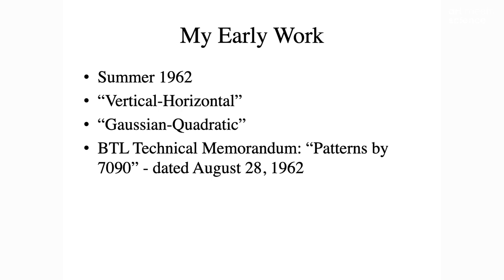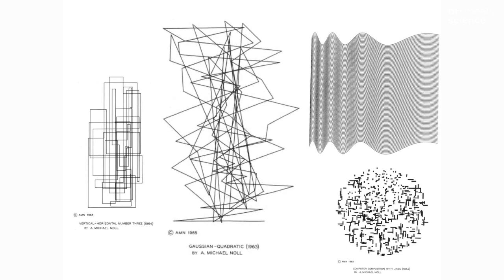That memorandum is up on the internet if somebody wants to read it. Some of my earliest works were vertical, horizontal, Gaussian quadratic. In the center is a Gaussian quadratic — in one direction it used random numbers calculated by the computer, and the other was a mathematical quadratic equation. It goes up to the top and then folds back down again. On the left are the vertical-horizontal pieces, requiring things to always go at 90 degrees. Up in the upper right is a takeoff on Bridget Riley's Currents, called 90 parallel sinusoids — if you wiggle the paper, it will ripple and give you an op art effect. Down at the bottom is the famous Mondrian experiment, which we'll talk about in a minute.